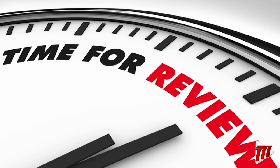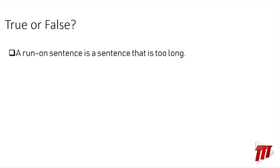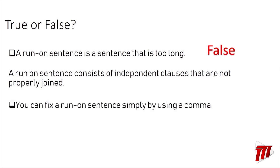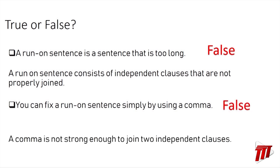Let's review what we've learned so far today. True or false: a run-on sentence is a sentence that is too long. If you said false, then you are correct, because a run-on sentence consists of independent clauses that are not properly joined. Here's another one: you can fix a run-on sentence simply by using a comma. This is also false, because a comma is not strong enough to join two independent clauses.